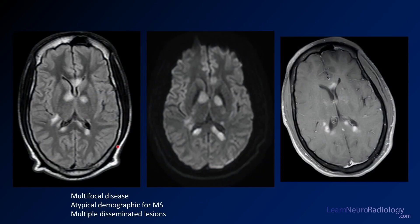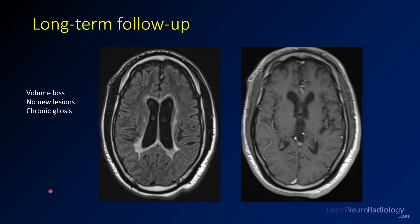Reviewing that same case: FLAIR abnormalities in the basal ganglia, corpus callosum, with abnormal diffusion and abnormal enhancement. This could be MS, but it's quite fulminant — many enhancing lesions simultaneously — and it's an atypical demographic, a younger person. Think about ADEM when you see multiple disseminated enhancing lesions in a young patient like this.